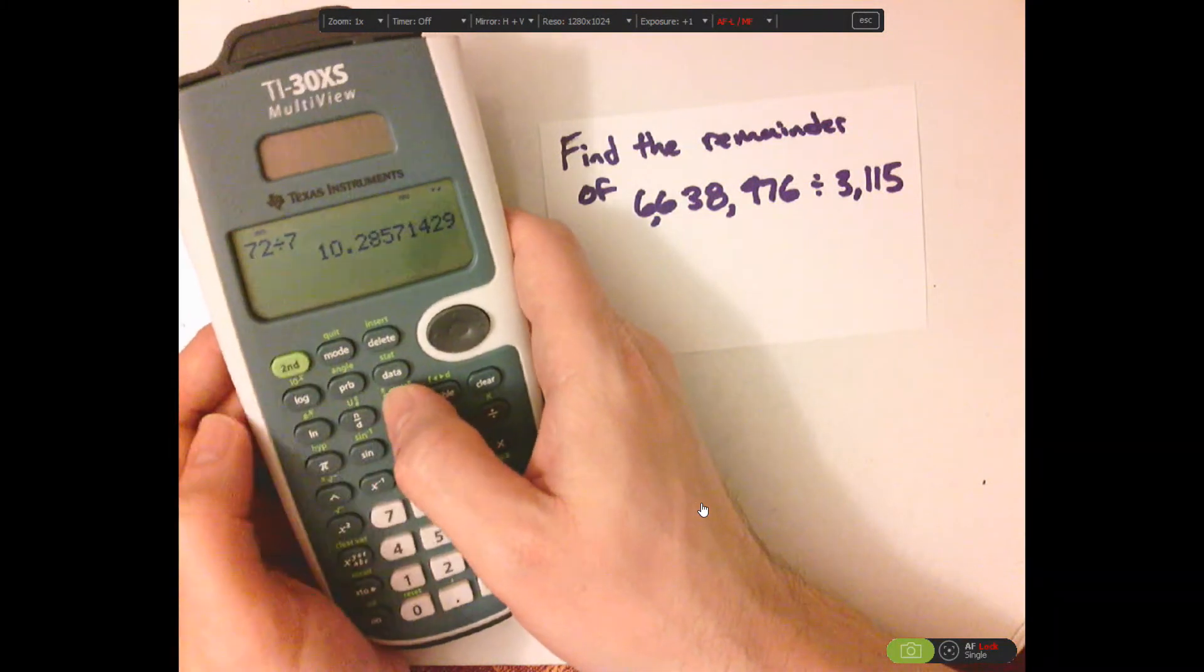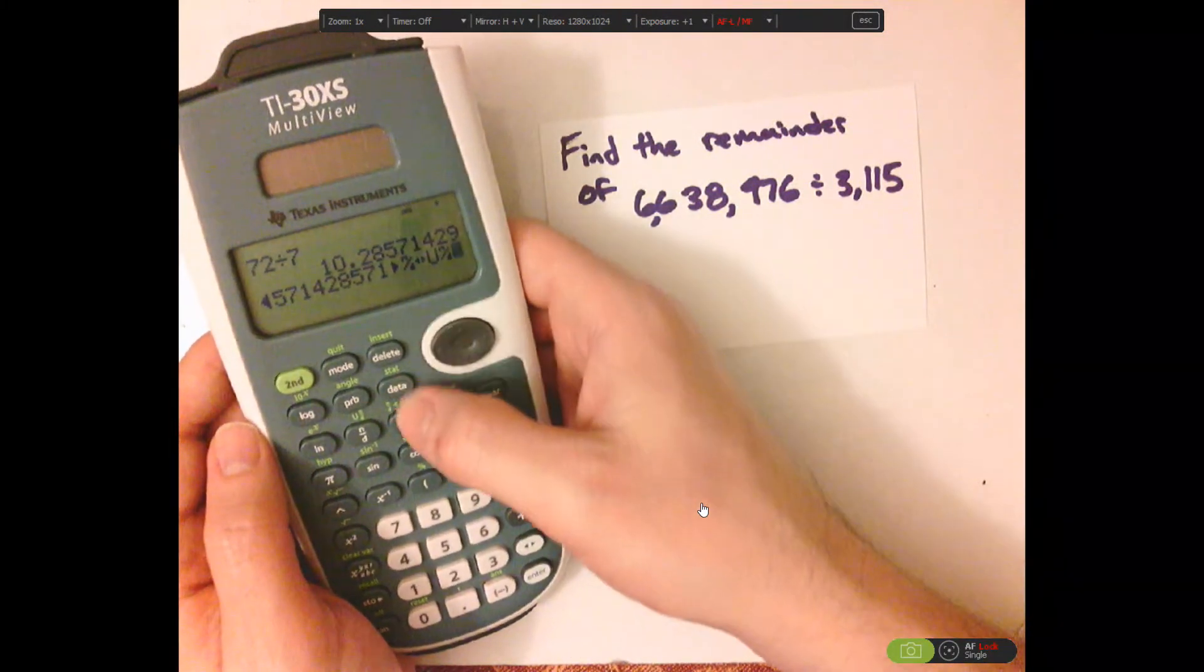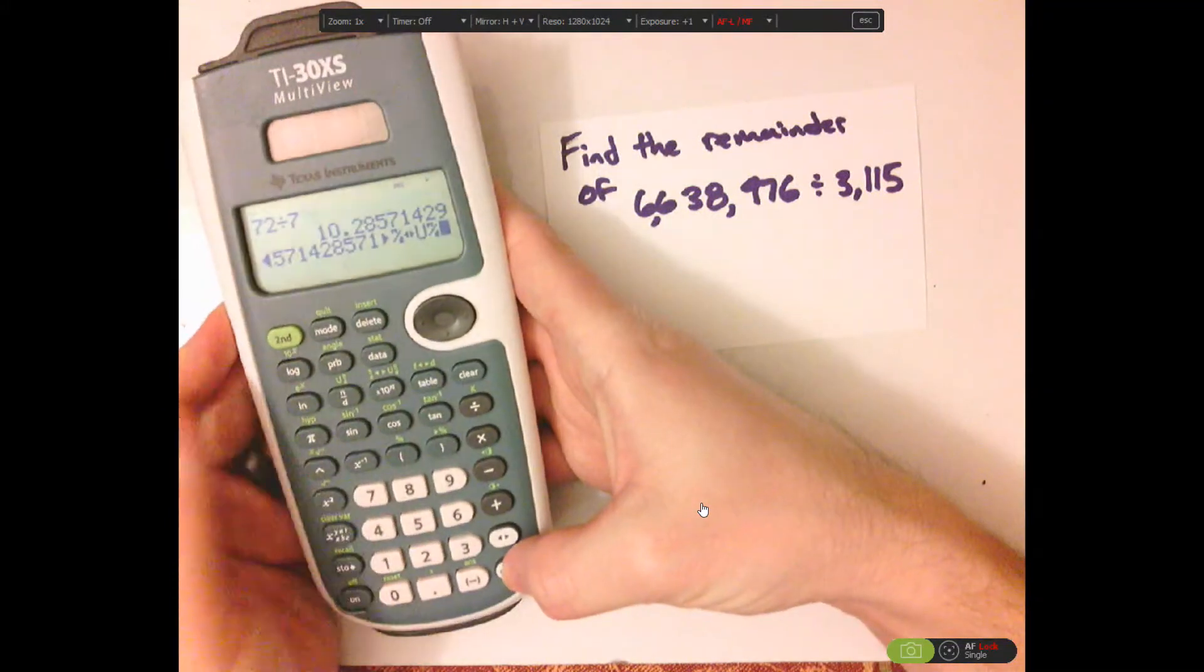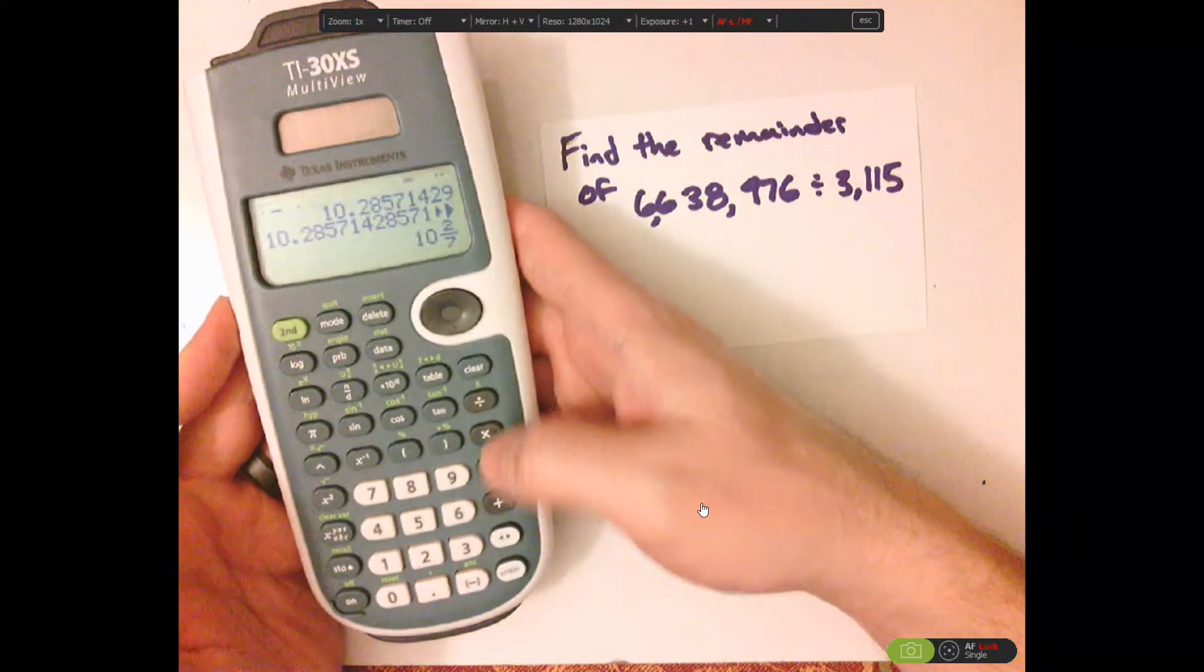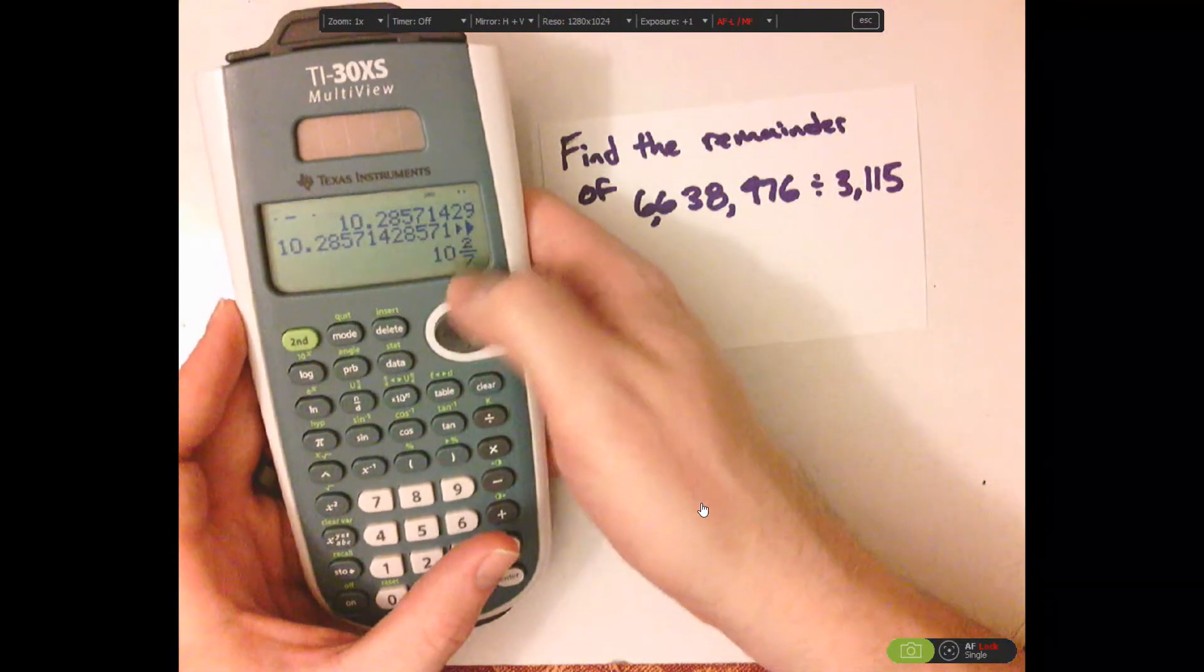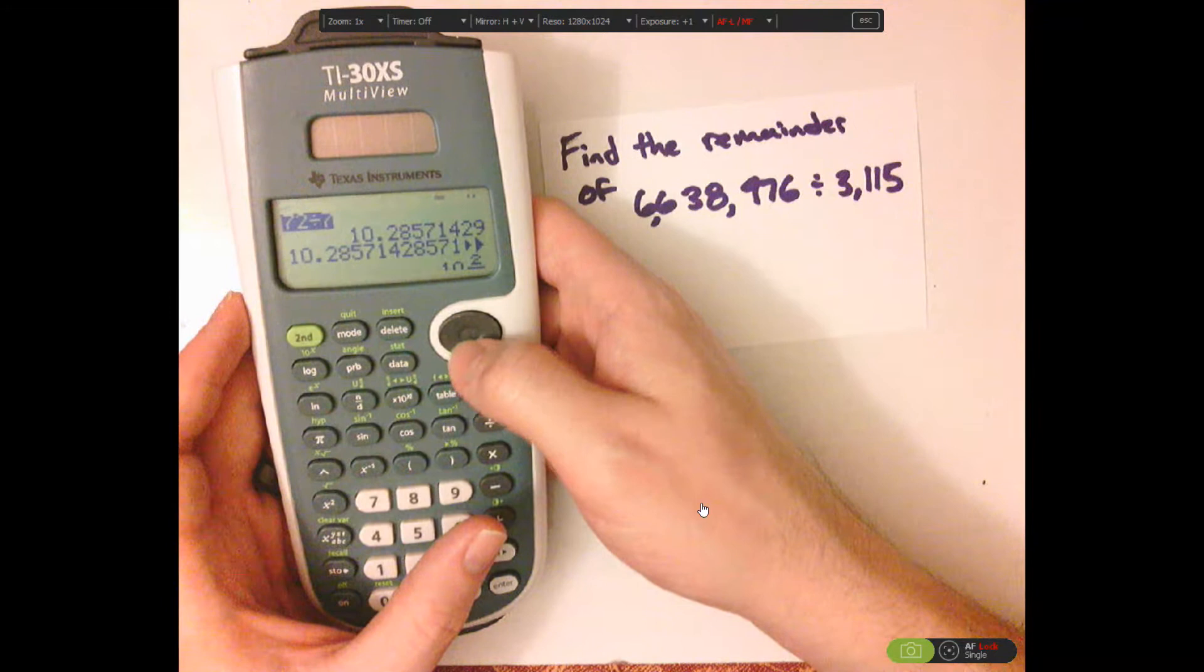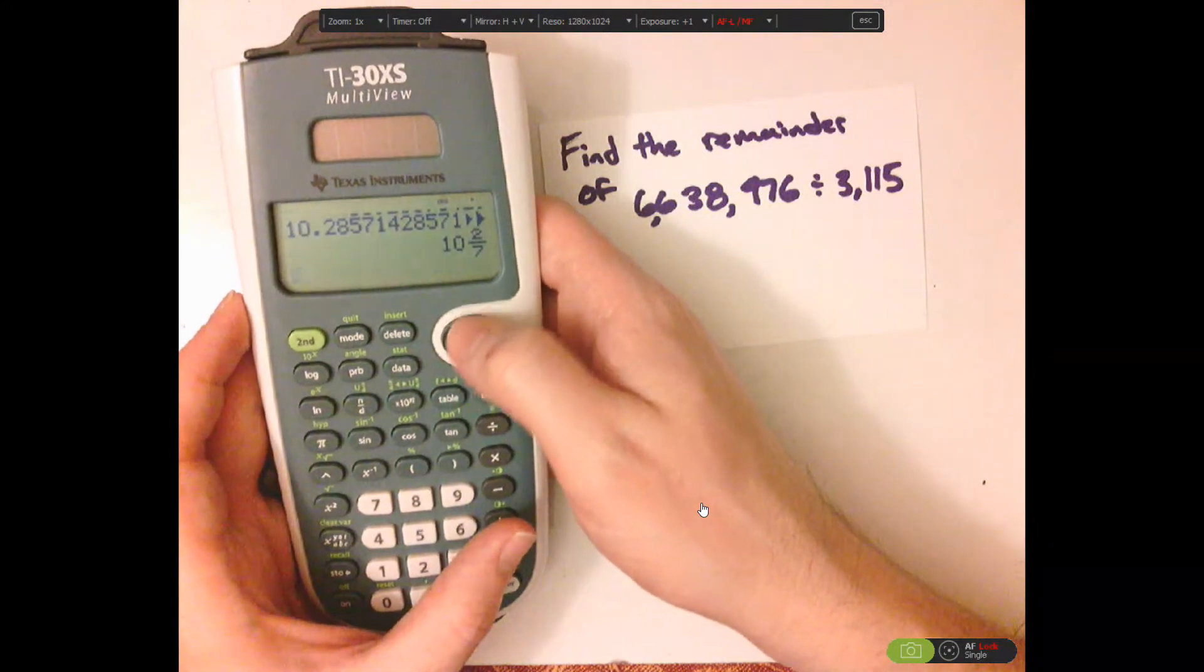So, second, and then push this button right here with the double arrows, and then push enter. So, my remainder for that one, 72 divided by 7, would be 10 and 2 sevenths.